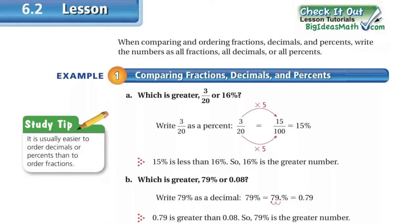Over on the study tip, it says it's usually easier to order decimals or percents than to order fractions. That's because ordering fractions would mean we need a common denominator, which is what people usually don't like about fractions.